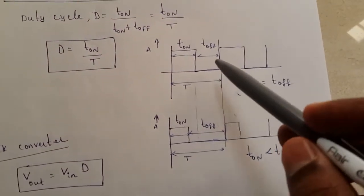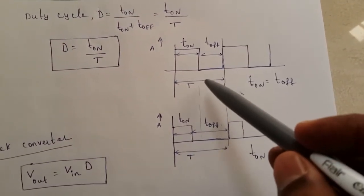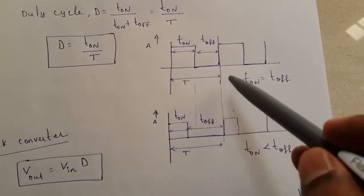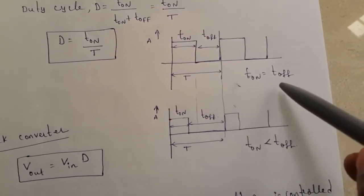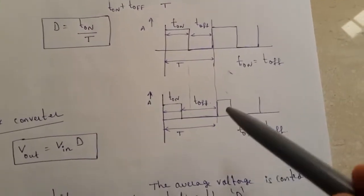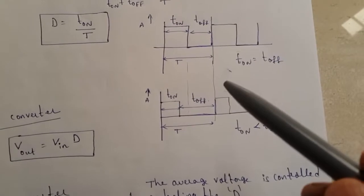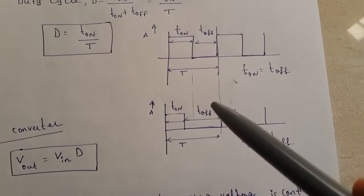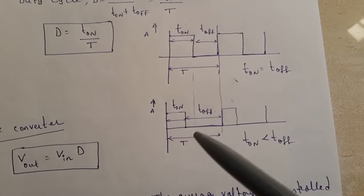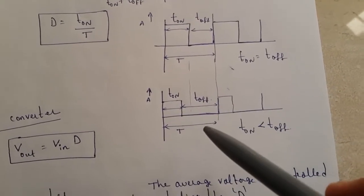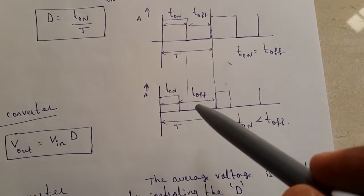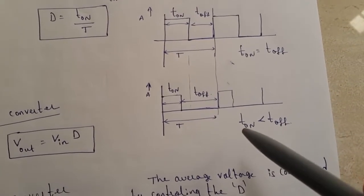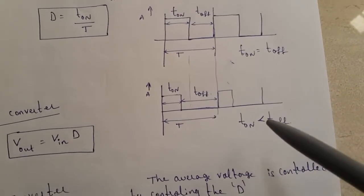This waveform has a time period T. In this baseline case, T_on is equal to T_off. If you want to decrease the duty cycle — that is, decrease the average output voltage — the T_on duration should be reduced, so T_on becomes less than T_off.